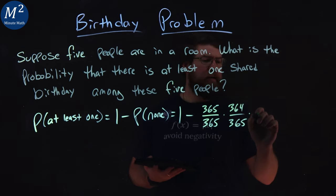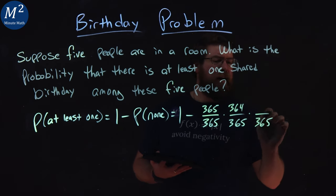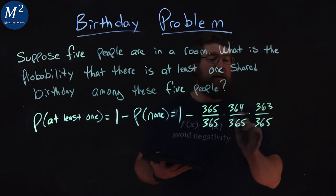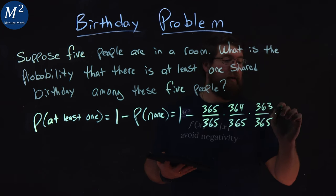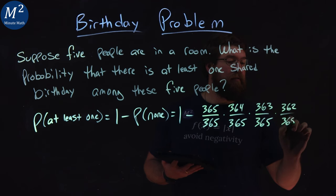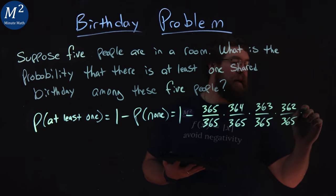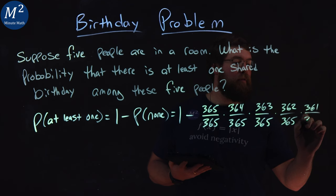And we have to do this five times. 365 over 363, that's three people have picked now. 362 out of 365, four people have picked. And lastly, 361 over 365.